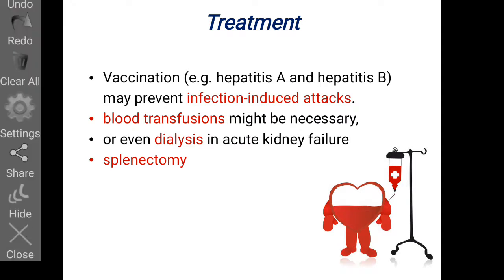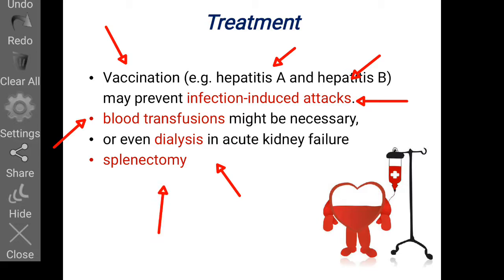For treatment: in terms of prevention, we can vaccinate against hepatitis A and B to prevent infection-induced attacks. In severe acute cases, blood transfusion or dialysis may be required in acute kidney failure. To prevent excessive destruction of RBCs, splenectomy — removal of the spleen — may ultimately be performed.